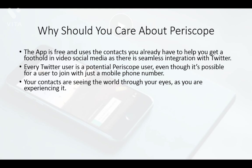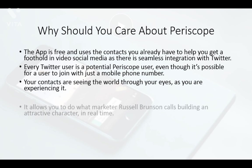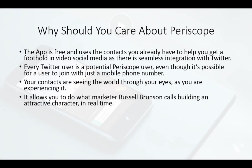One of the reasons Periscope is so incredibly powerful for getting people to connect with you is because it allows your Twitter followers not only to see what you write, but also to see the world through your eyes as you're experiencing it in real time. Those who connect with you live can see the world as you're seeing it. It allows what marketer Russell Brunson calls building an attractive character in real time — people become familiar with your life as you're experiencing it, not as you email or tell them about it.